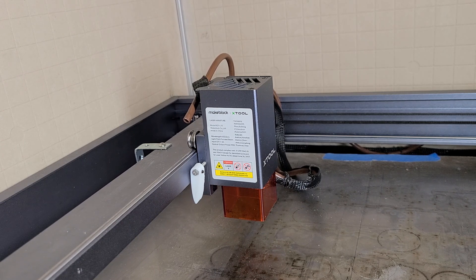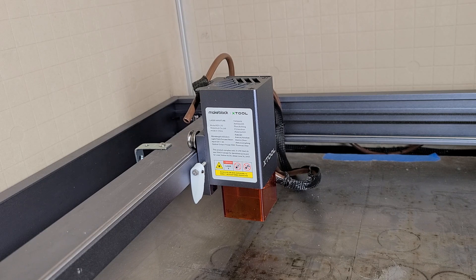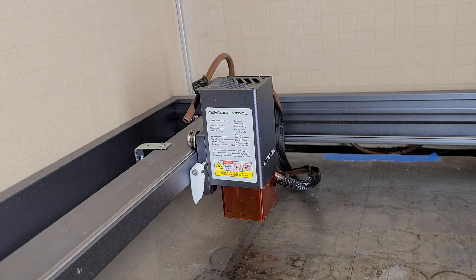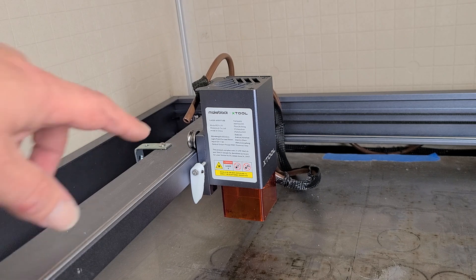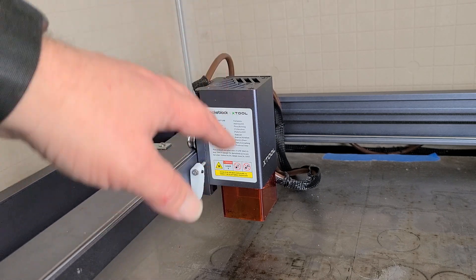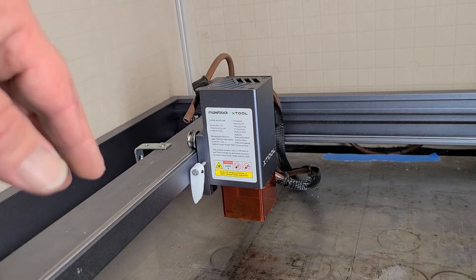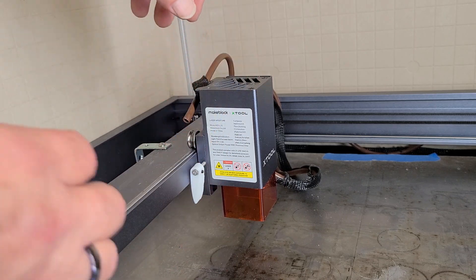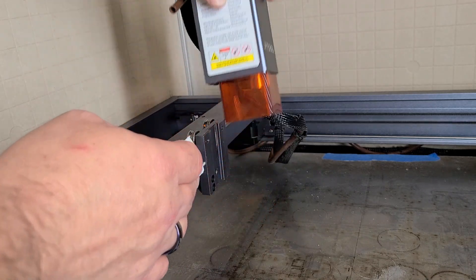All right, so next step is we have to remove the laser module from the x-gantry and the little carriage it's on. If you have a stock one, you have your little screw that sits here that allows you to loosen it up to move it up and down. Go ahead and loosen it up. Once it's loose enough to move up and down, you can just go ahead and remove it. Just like that.